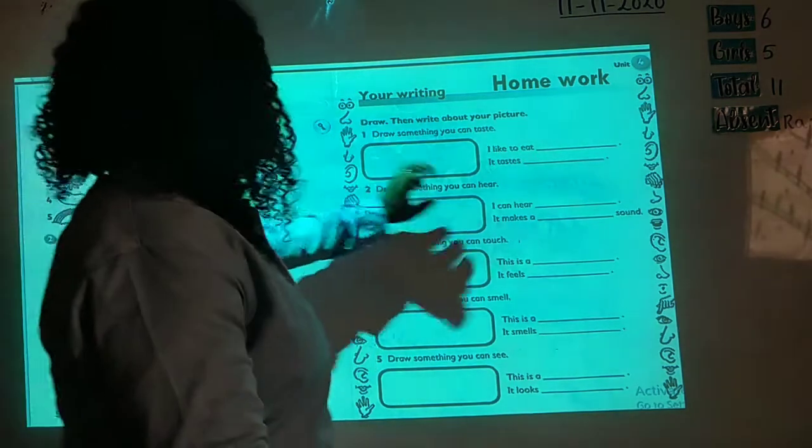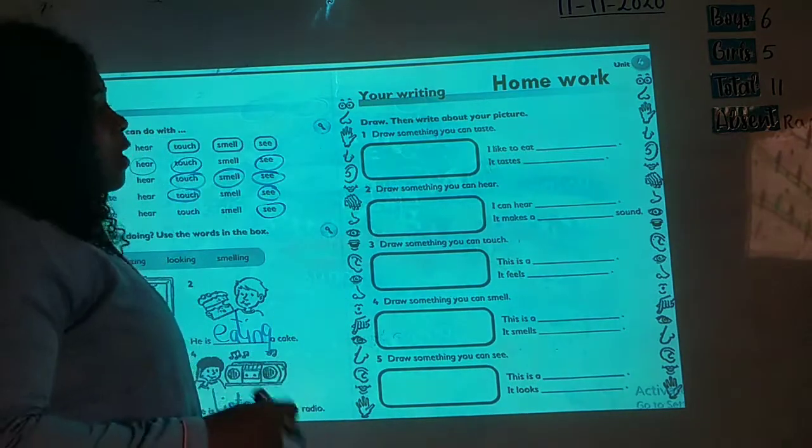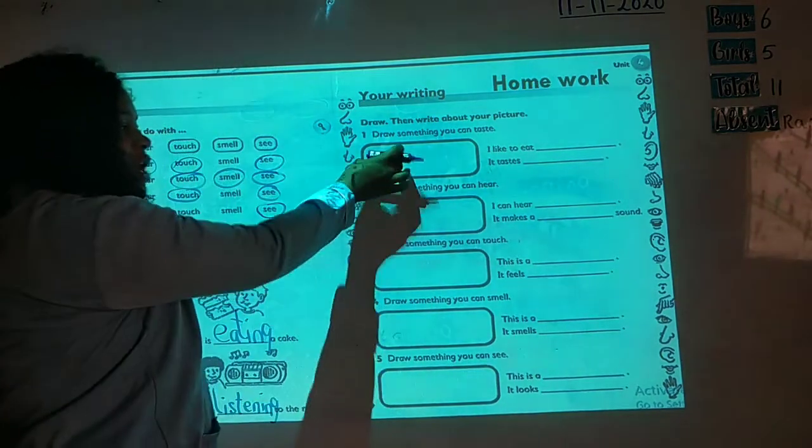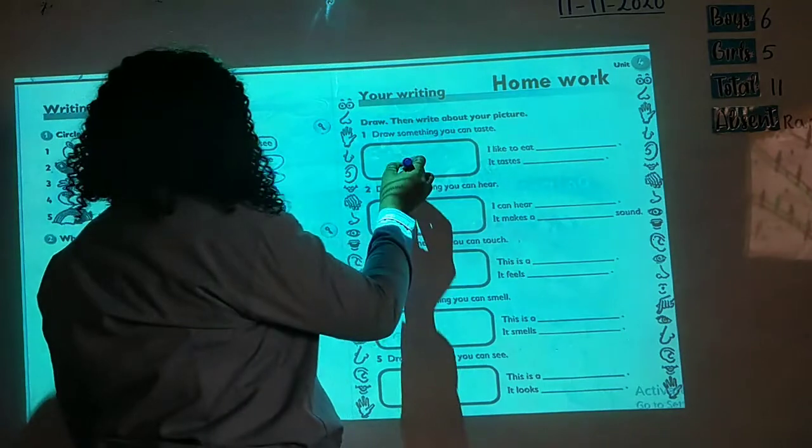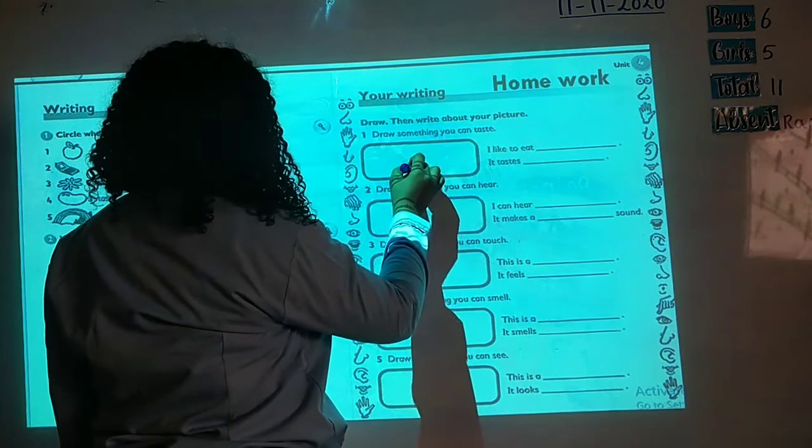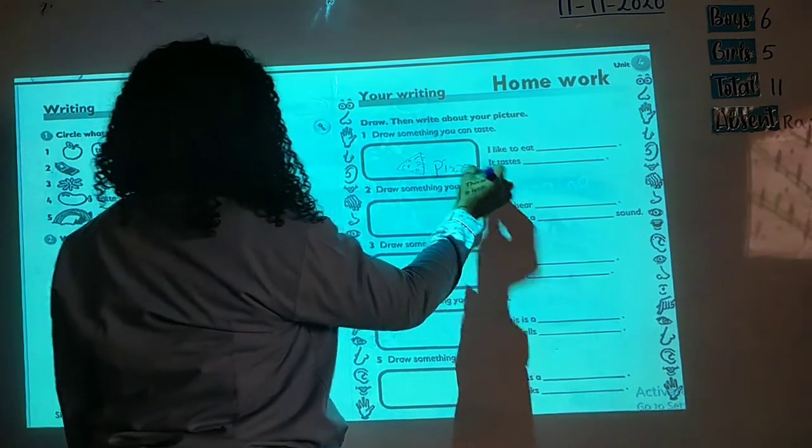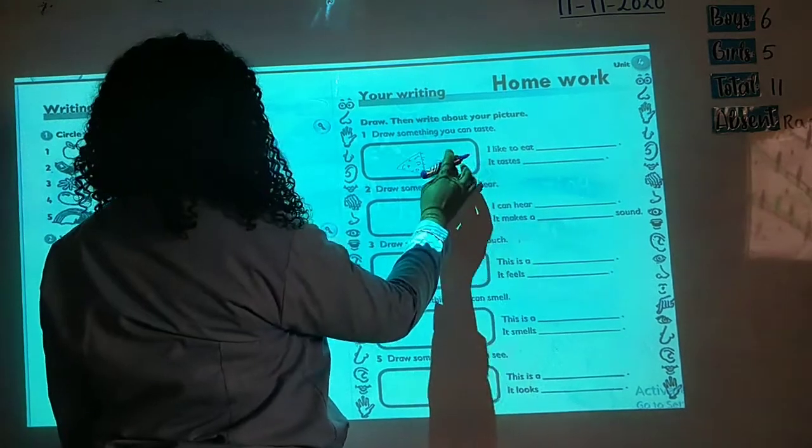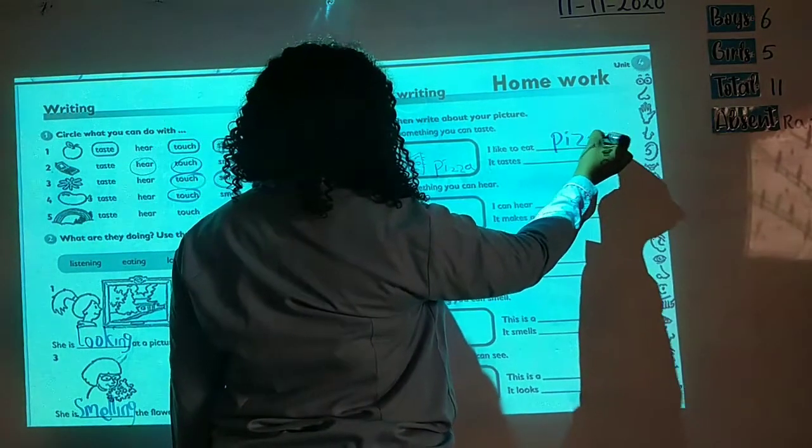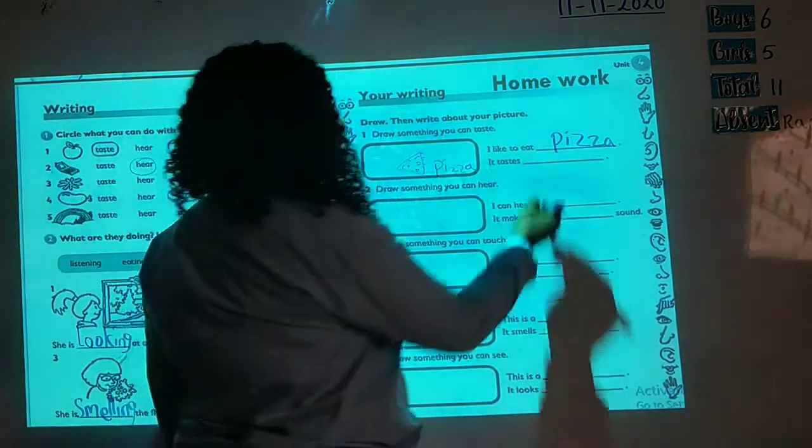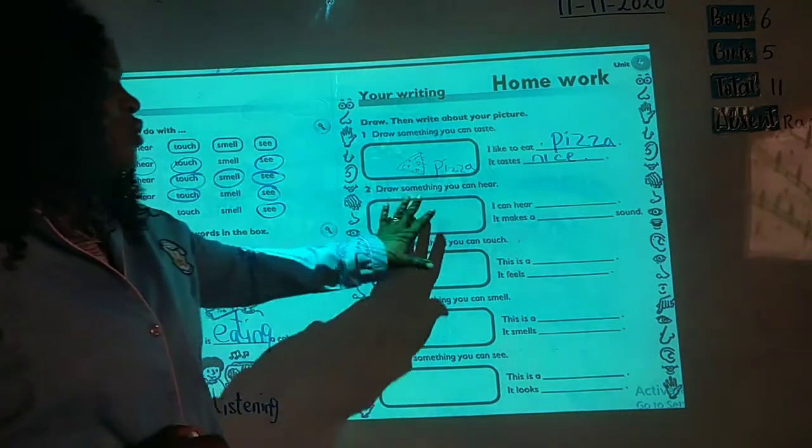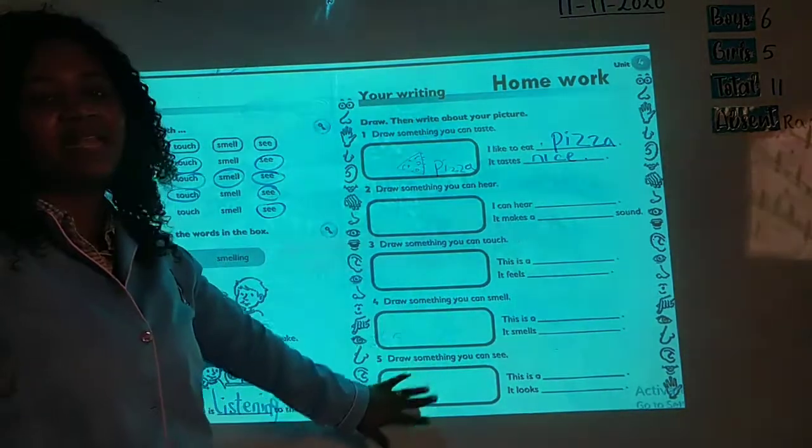Now, this homework, I will just do one for you and then you will finish it up. Here, draw. Then write about your picture. Draw something you can taste. So, what can we taste here? You can draw sandwich. You can draw pizza. This is my pizza. Now, I like to eat pizza. It tastes nice. So, this is it about your homework. Use the same illustration for all the others.